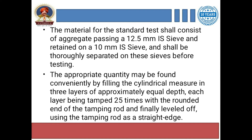The material for the standard test sample consists of aggregate passing through the 12.5 mm sieve and retained on the 10 mm sieve. This sample is placed in a cylindrical measuring cylinder. We do not fill the cylinder all at once — we fill it in steps. First, pour one third of the aggregate into the cylinder and tamp it.